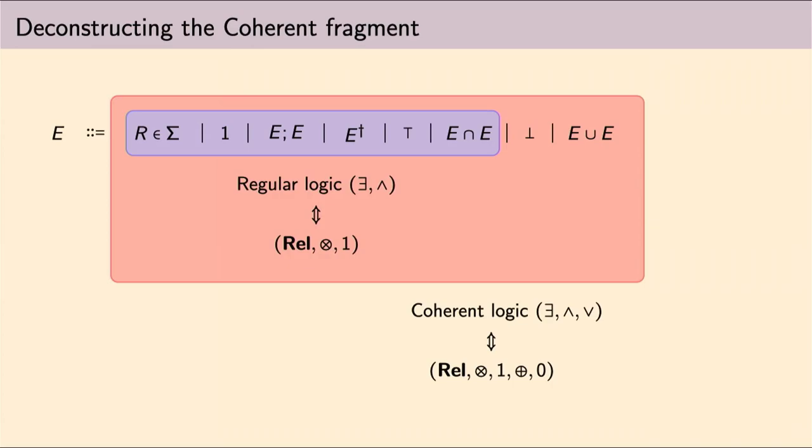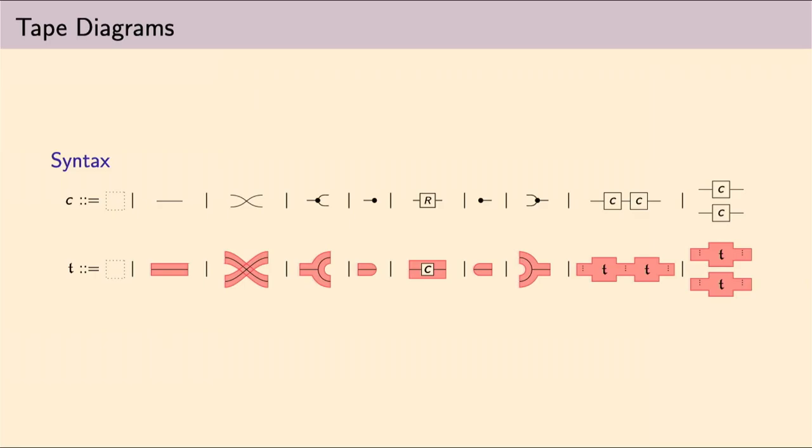Well, unfortunately, this is a rig category, and then we don't know how to depict its arrows. We don't know how to deconstruct this fragment. And so, our solution is tape diagrams, which are nicely represented in this two-layer grammar, where the first layer is exactly the one we saw before, the one of string diagrams, and the second layer is actually how we construct tapes.